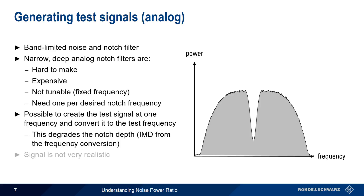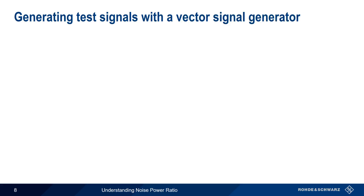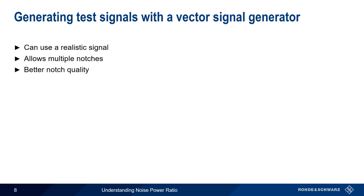Analog NPR test signals also suffer from a serious drawback in that they're not very realistic. A broadband noise signal will generally not create the same levels of intermodulation distortion as the actual modulated signal, especially when the modulated signal has a high crest factor or peak-to-average ratio. The more flexible and more accurate approach to creating NPR test signals is using a vector signal generator. One of the main advantages is that a realistic test signal can be used — one that has the same modulation characteristics, peak-to-average ratio, etc., as the signals that are normally used with a device under test. It's also easier to create multiple notches, and we can typically get better notch quality: steep, deep, and narrow.